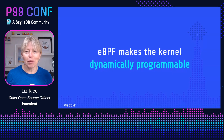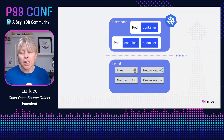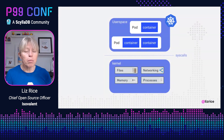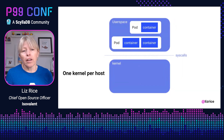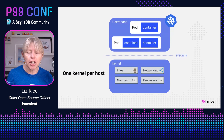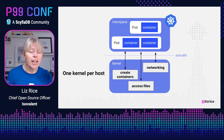This makes eBPF an incredibly powerful platform for writing common tooling and instrumentation. The kernel is the part of the operating system that interfaces with hardware. Whenever your applications want to access files, send or receive messages, or allocate memory, they have to ask the kernel to do that on their behalf using the syscall interface. The kernel is also responsible for coordinating different processes and for checking permissions and privileges. In Kubernetes, there's still just one kernel per virtual machine or physical machine, shared by all the processes and all the containers, regardless of which pod they're running in.